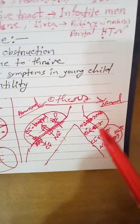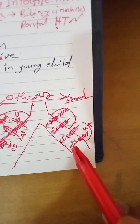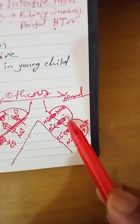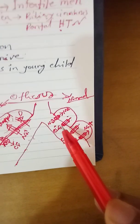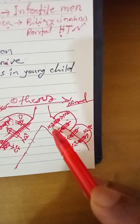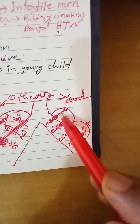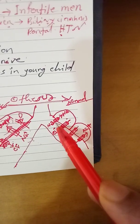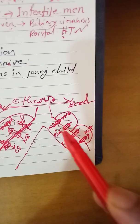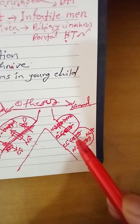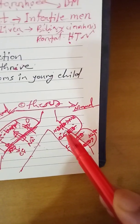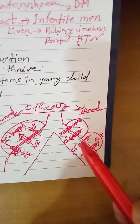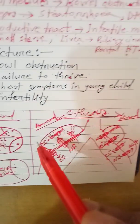Now let us look at the internal secretion. Normally in the airway epithelium, there is chloride secretion into the lumen. When chloride is secreted, sodium follows. This maintains an adequate concentration of sodium chloride and water in the mucous lining, which is very important to maintain the hydration of the lining epithelium.